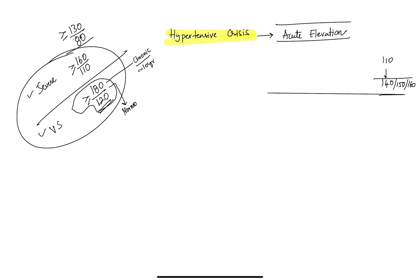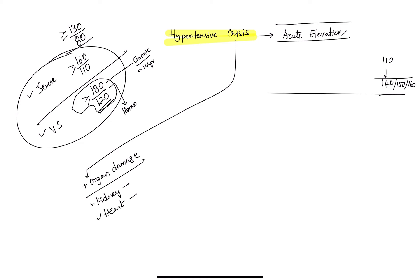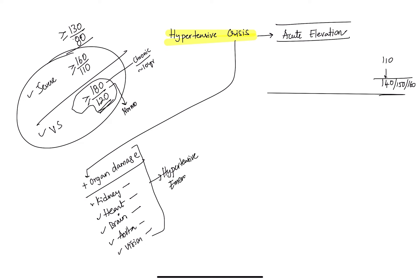Any acute elevation in BP is a hypertensive crisis. If this acute elevation is associated with organ damage, we call it a hypertensive emergency. The organs that can be damaged include the kidney — check urine analysis; the heart — check cardiac biomarkers, cardiac enzymes, and ECG; the brain — the patient may develop hemorrhagic or ischemic stroke, requiring CTA; the aorta — the patient may develop aortic dissection, requiring CTA angiography; and the eyes — check for papilledema.